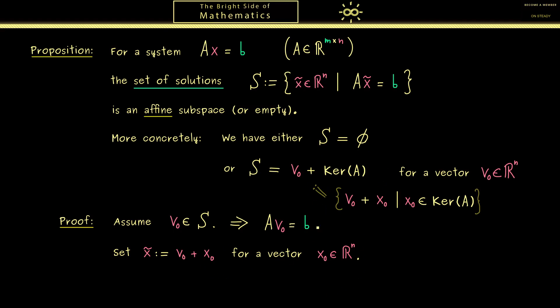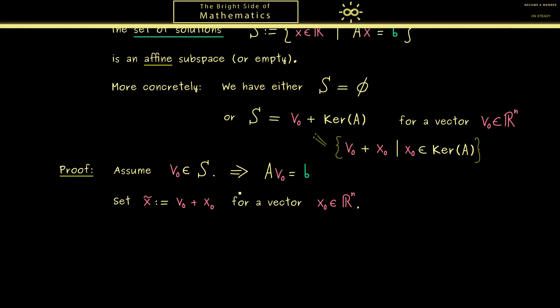Because with this definition, we now have to show that x̃ is a solution if and only if x_0 lies in the kernel of A. In other words, by using this definition here, we now have to show an equivalence. We start on the left-hand side that x̃ is an element of S. So this is equivalent to x̃ solving the system.